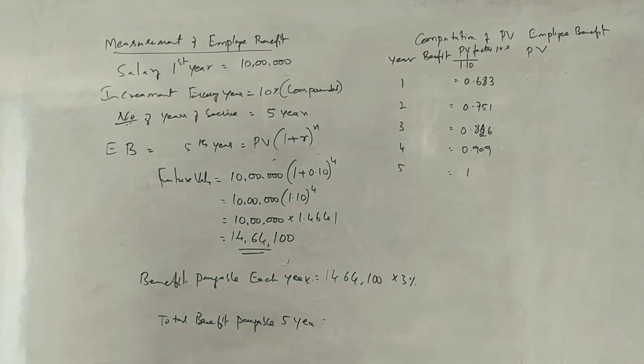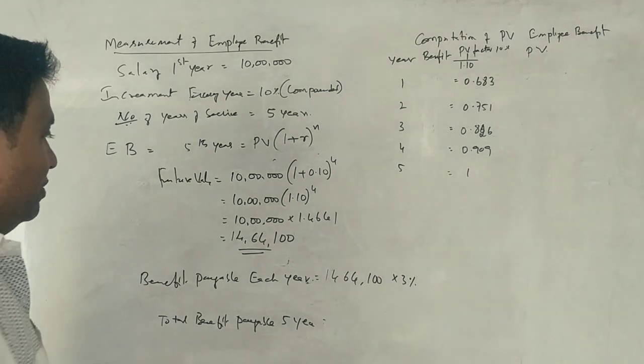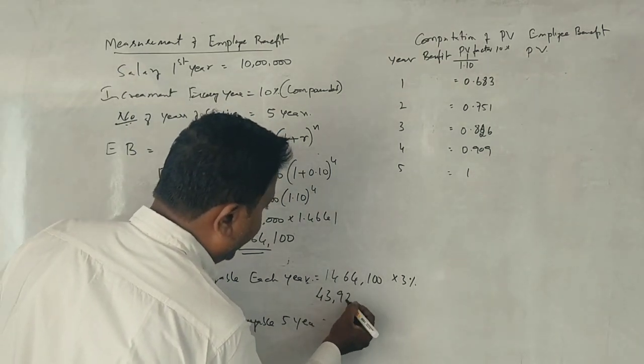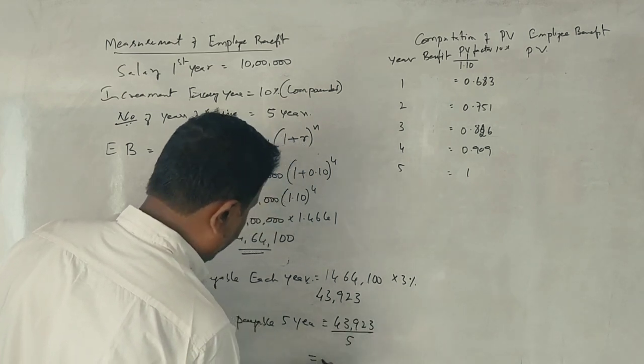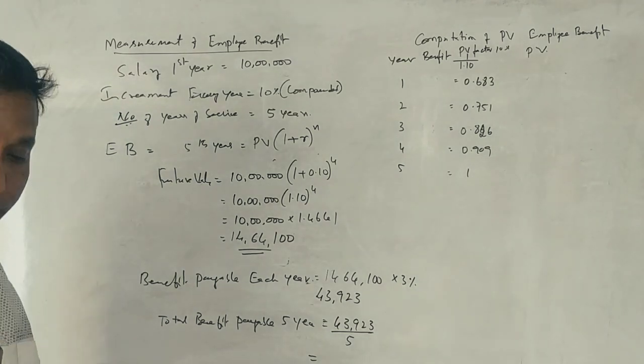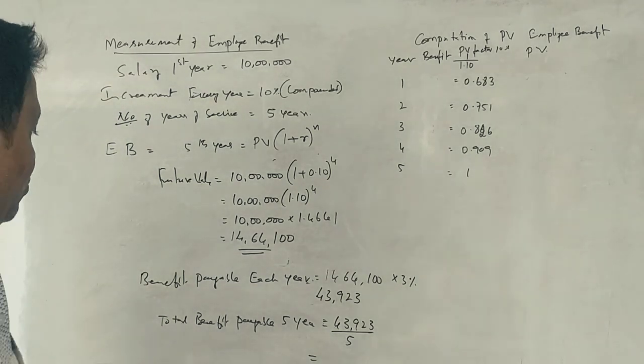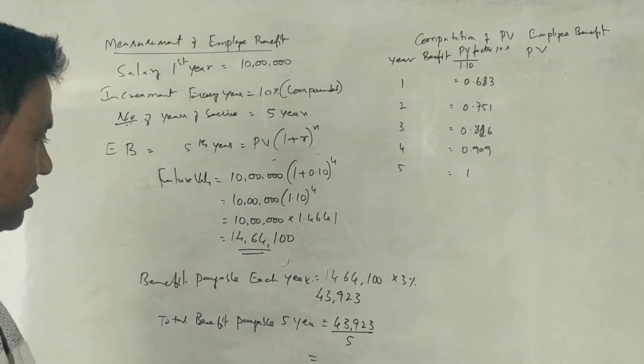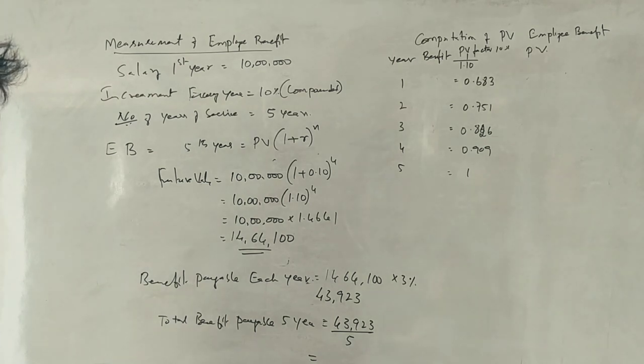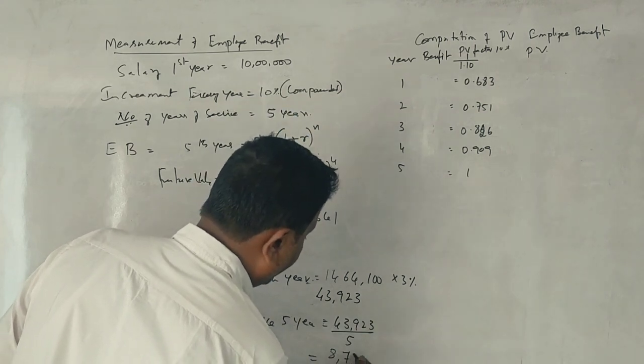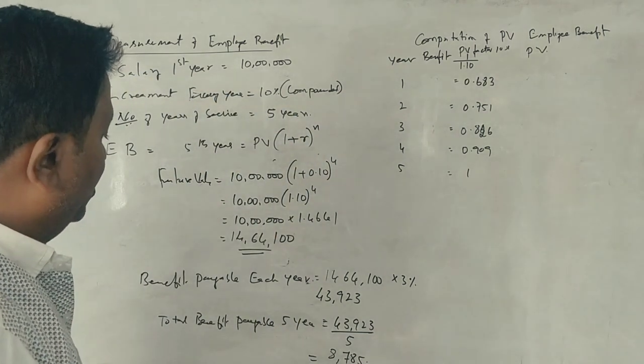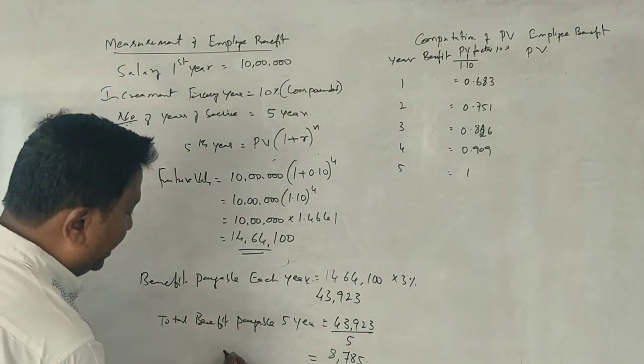So future value divided by 5 years. For each year we need to calculate the present value. The amount for the 5th year is 8,785.